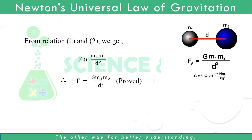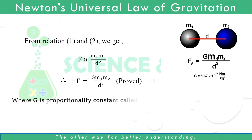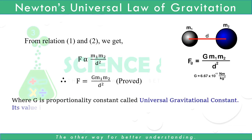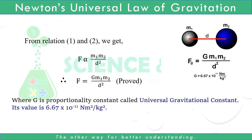Hence proved, where G is the proportionality constant called the Universal Gravitational Constant. Its value is 6.67 × 10⁻¹¹ N·m² / kg².